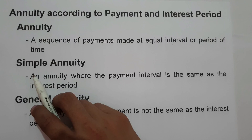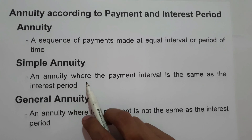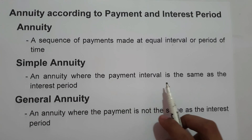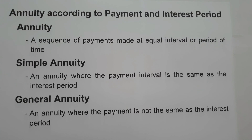The first type is simple annuity. Simple annuity is an annuity where the payment interval is the same as the interest period. That means if the payment interval is the same as the conversion period, then the given example is an example of simple annuity.